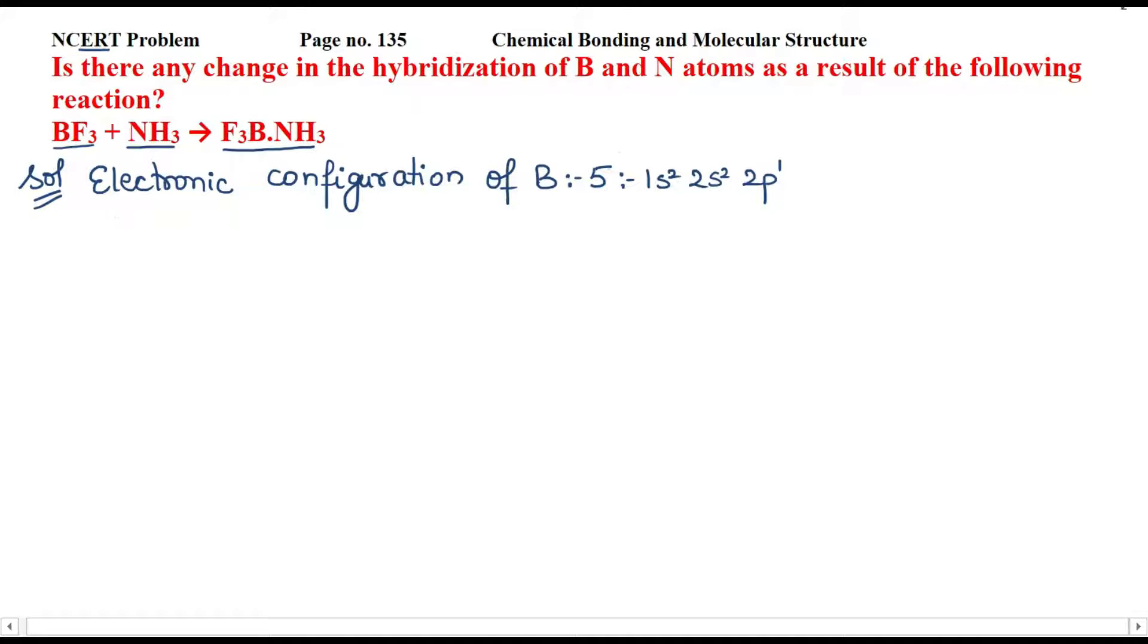Now, we have to find out the excited state. Because if it is boron, it is definitely an excited state of electronic configuration. So, excited electronic configuration of boron: 1s2, 2s1, 2px1 and 2py1. Because we have fluorine here, we have three fluorine. So obviously, if we have sharing basis, we have three vacancies.